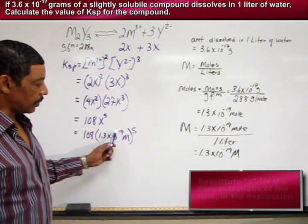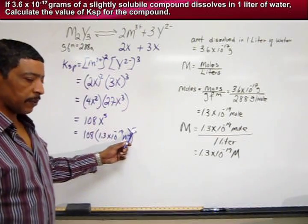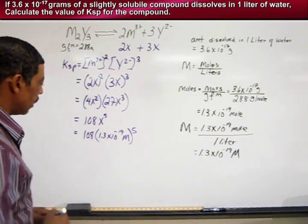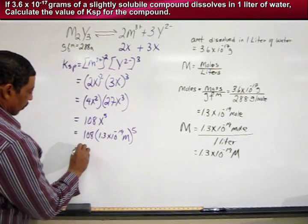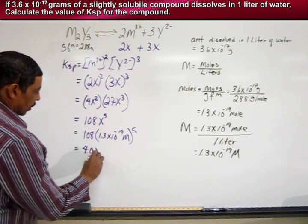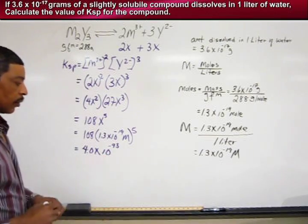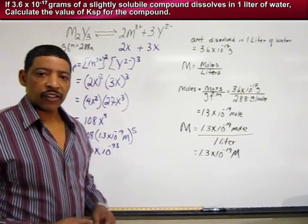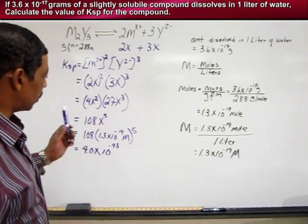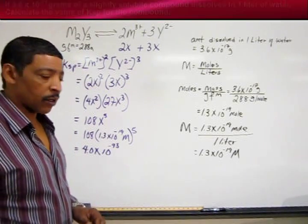1.3 times 10 to the -19 raised to the fifth power times 108 is equal to 4.0 times 10 to the -93. So we see that the KSP value for this particular compound is very small, which is indicated by the negative exponent.